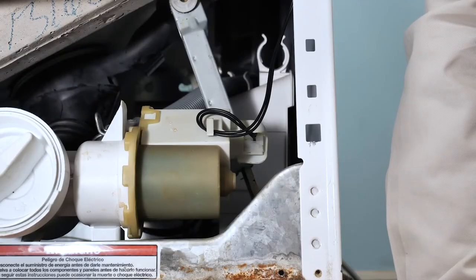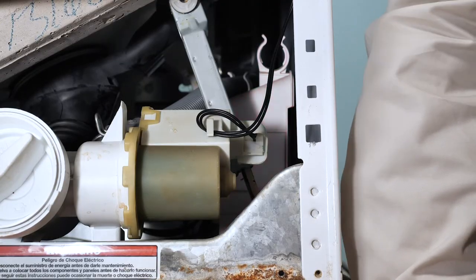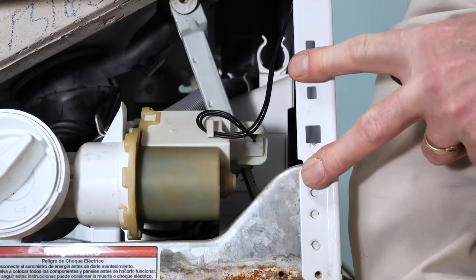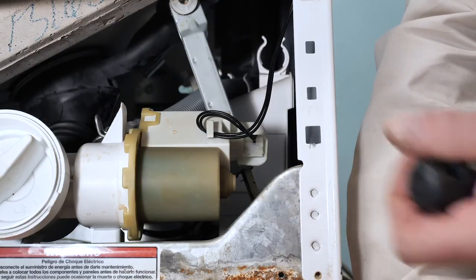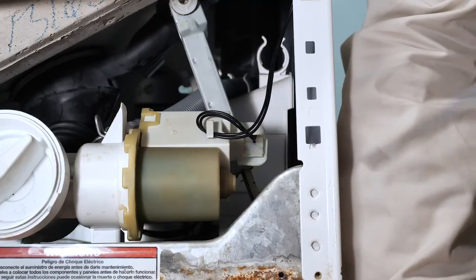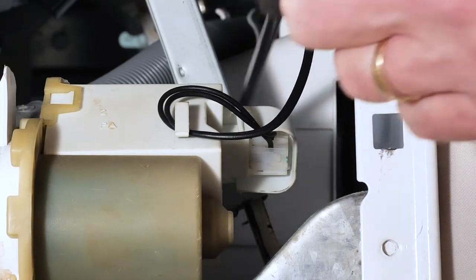Now, if our fault codes suggest a potential problem with the motor control board, we'll need to locate that. As mentioned, it's typically located on the bottom of the washer, either left or right side, so we'll need to remove the lower access panel and locate the housing that that control board is located in.